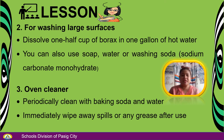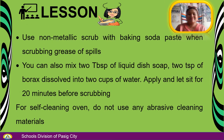Number 3 — oven cleaner. Periodically clean with baking soda and water. Immediately wipe away spills or any grease after use. Use a non-metallic scrub with a baking soda paste when scrubbing grease or spills. You can also mix 2 tablespoons of liquid dish soap and 2 teaspoons of borax dissolved in 2 cups of water — apply and let sit for 20 minutes before scrubbing. For self-cleaning ovens, do not use any abrasive cleaning material.